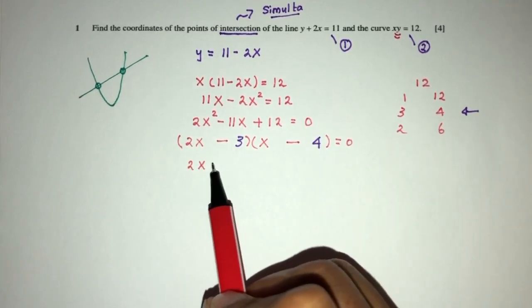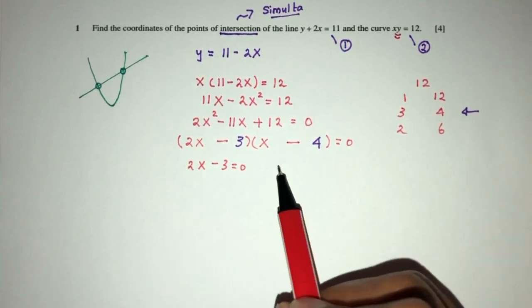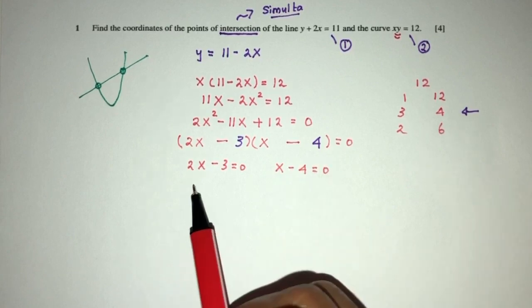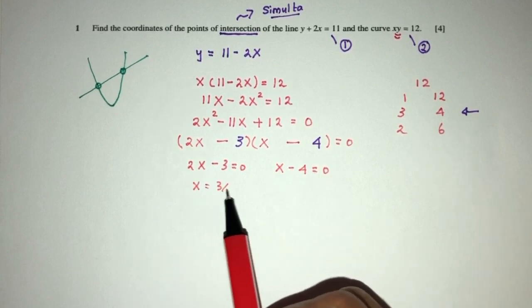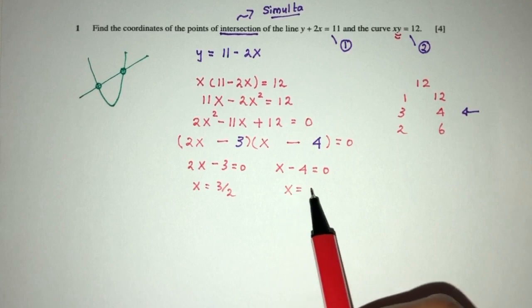Now solve. That will be 0. This also equals 0. So x equals 3/2, and x equals 4.